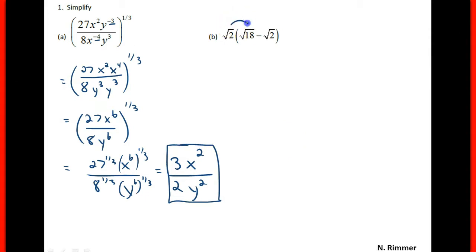For part b, we'll distribute the root 2 across to get the square root of 18 times 2 minus the square root of 2 times the square root of 2, or the square root of 4. So we get the square root of 36 minus the square root of 4. The square root of 36 is 6, the square root of 4 is 2, for an answer of 4.